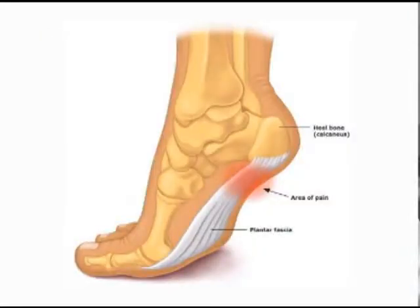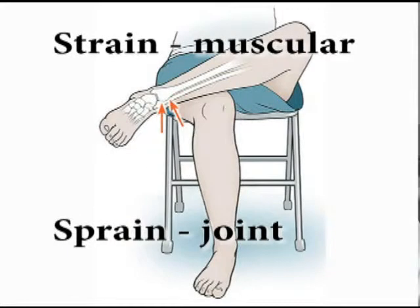Basic sprains and strains — a strain is usually a muscular type of injury, while a sprain is usually more of a joint-related injury. But all of which can be chronic and debilitating, or some can be rather mild and easy to deal with.